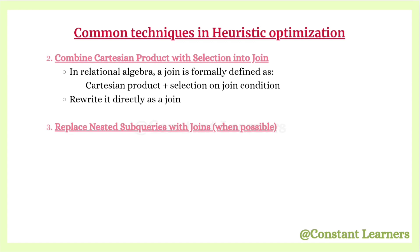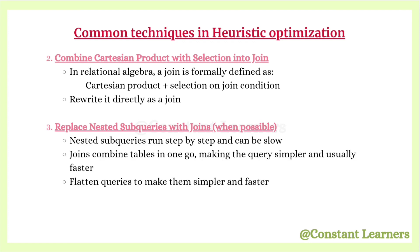The next technique is to replace nested subqueries with joins whenever possible. Nested subqueries run step by step and can be slow. However, joins combine tables in one go, making queries simpler and usually faster. So whenever possible, we replace subqueries with joins to flatten the queries.